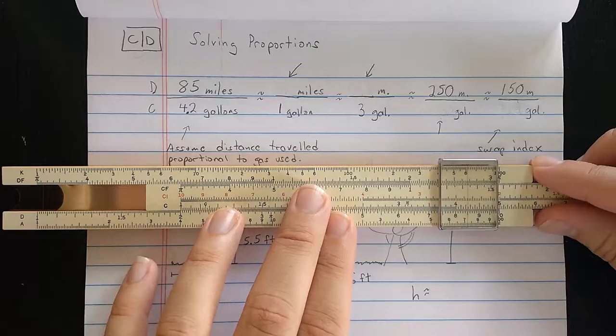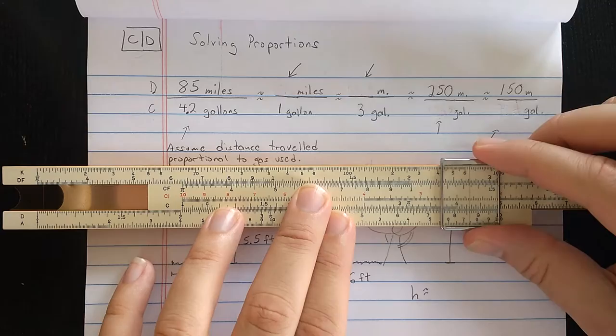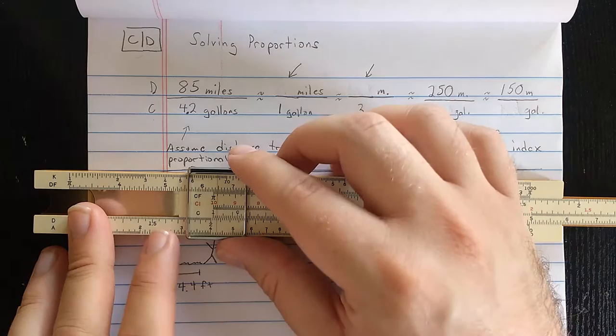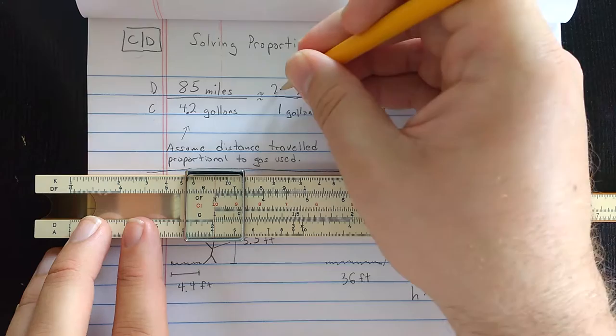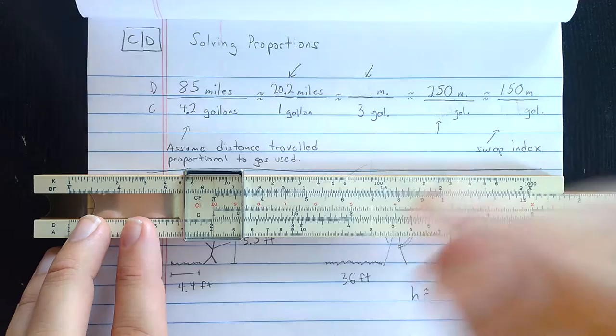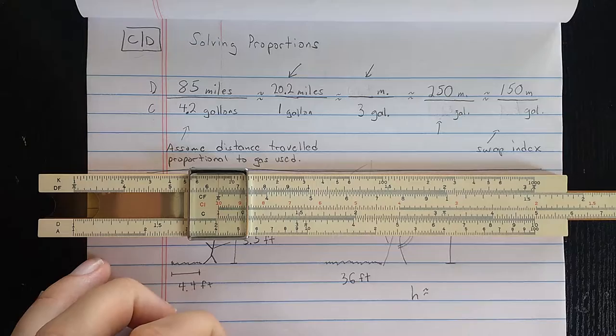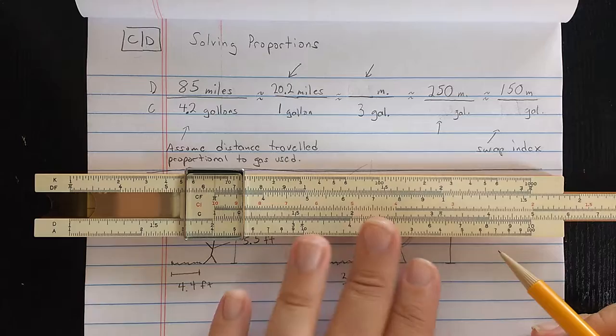Of course, we're getting about order of magnitude. Let's make sure the alignment is good. Now, anywhere I move the cursor should read that same ratio. So if I read at the 1, then I read about 20.1 miles. That's really 20.2, since each mark there is 2. So about 20.2 miles on 1 gallon.